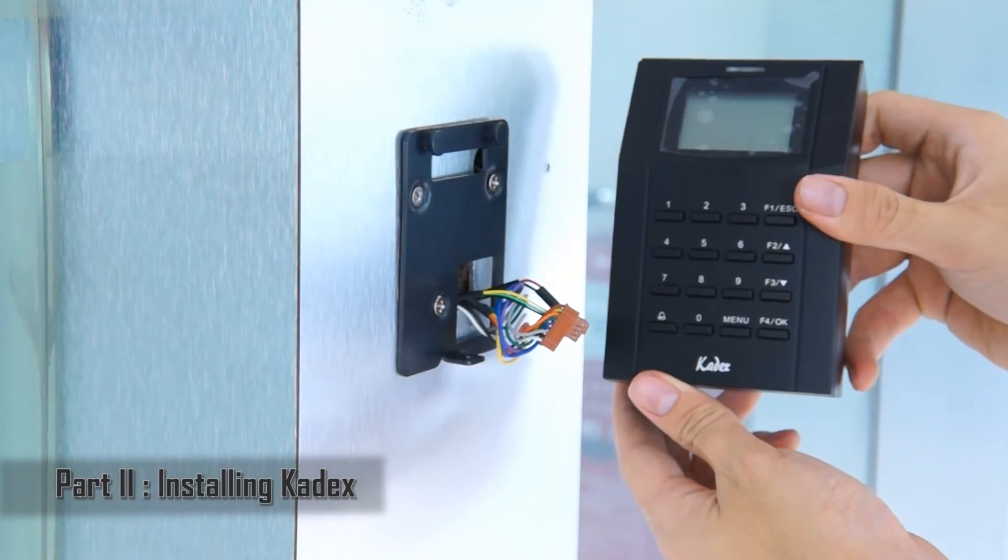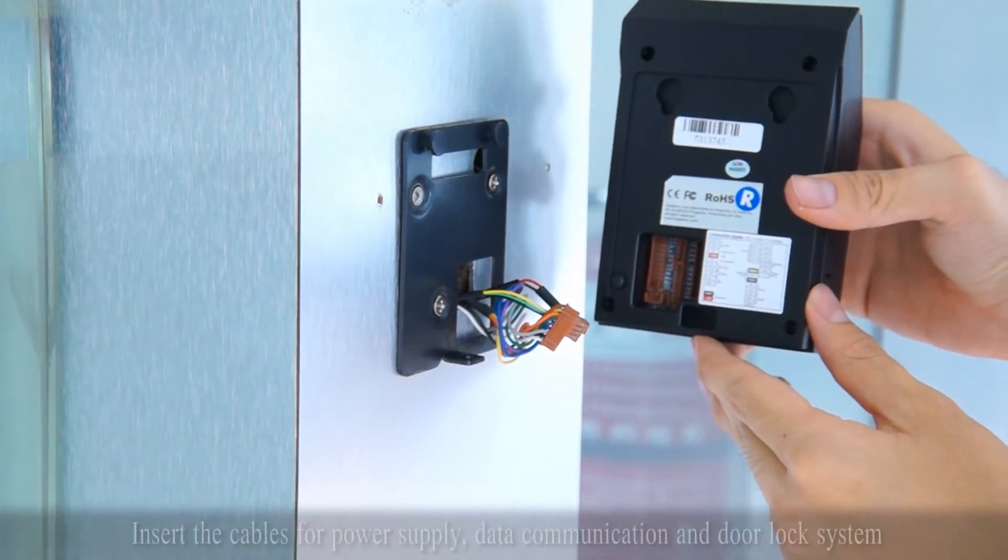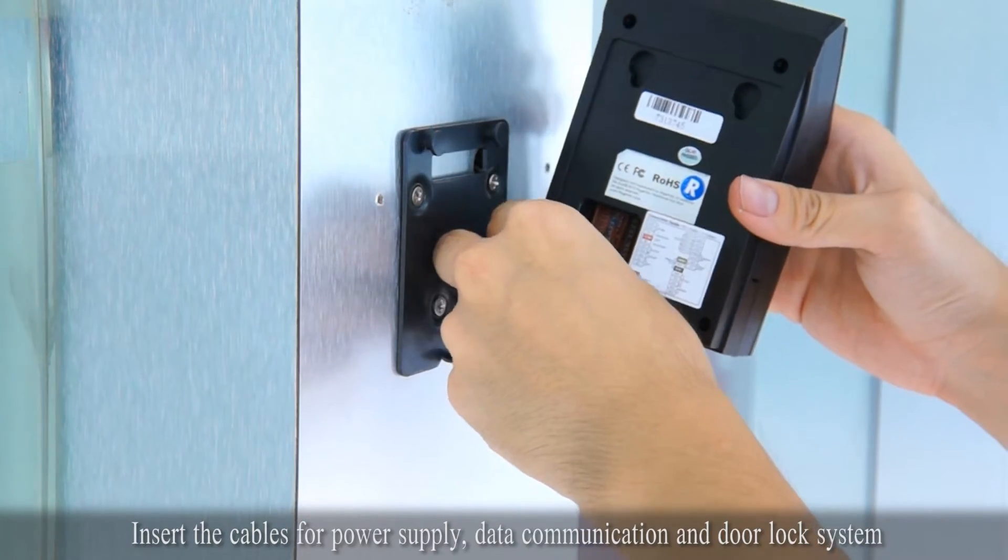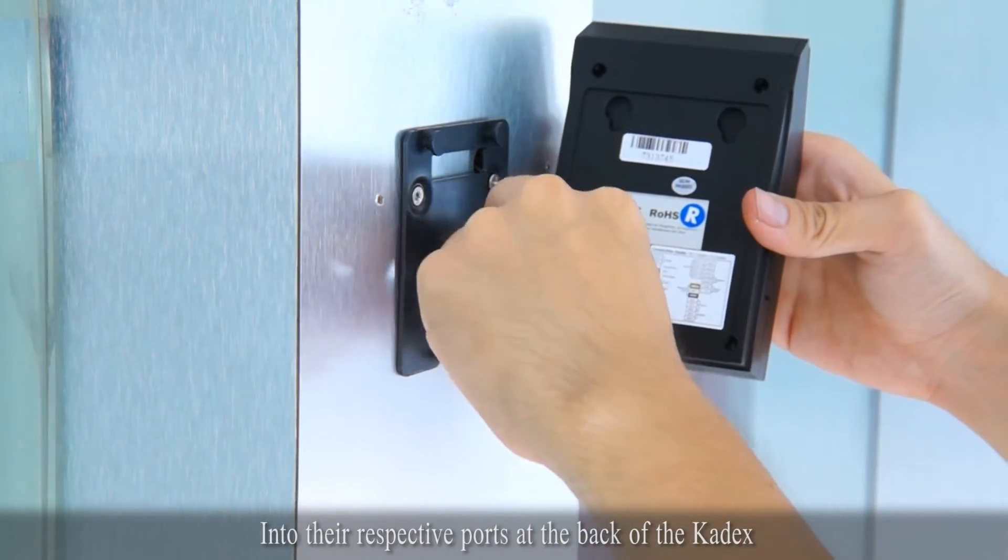Part 2: Installing Cadex. Insert the cables for power supply, data communication, and door lock system into their respective ports at the back of the Cadex.